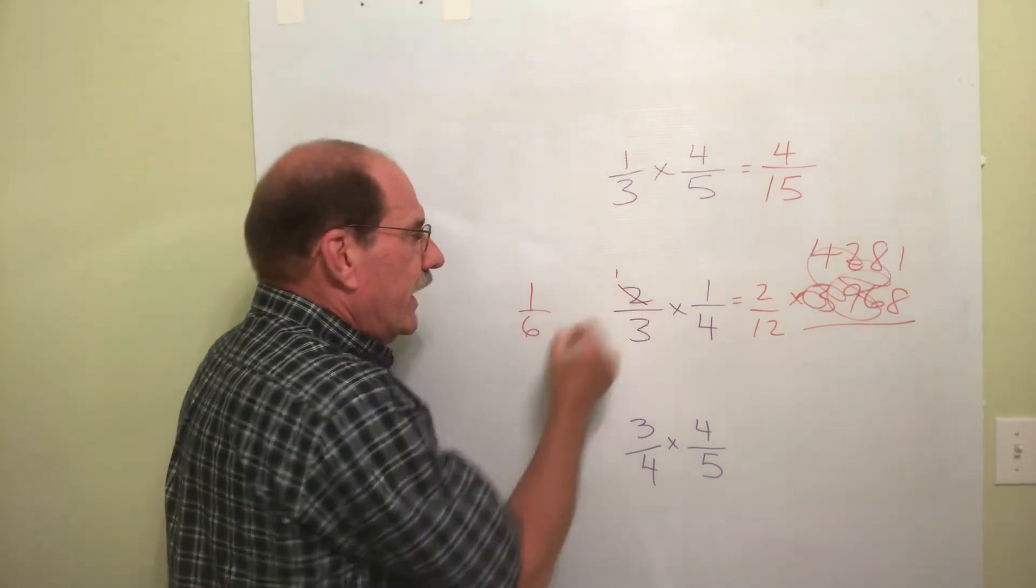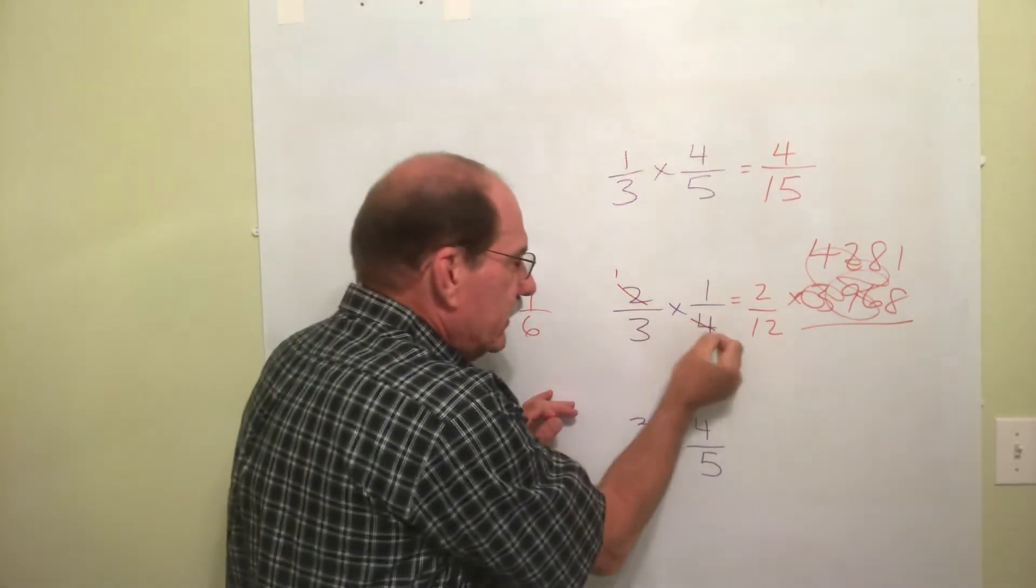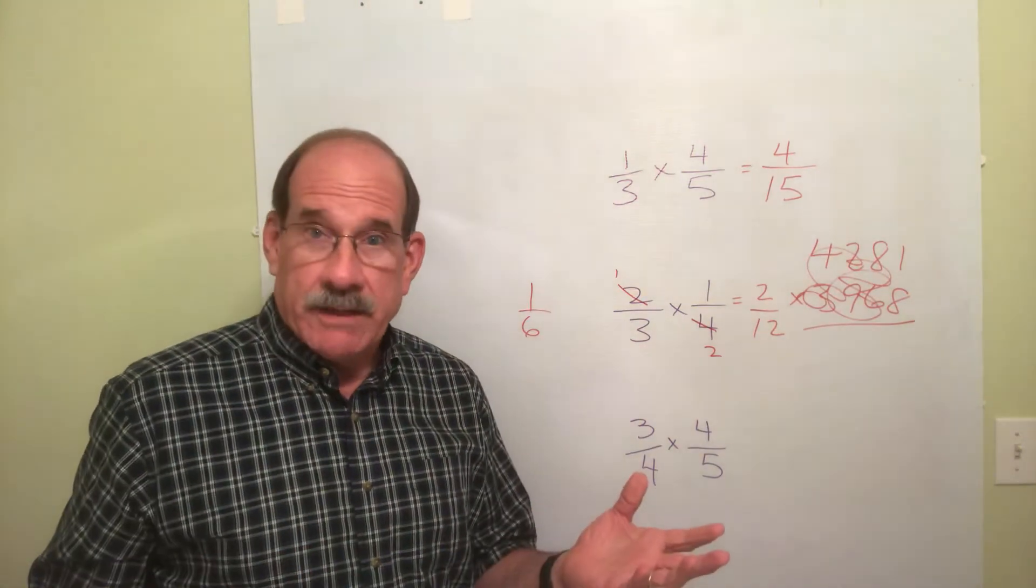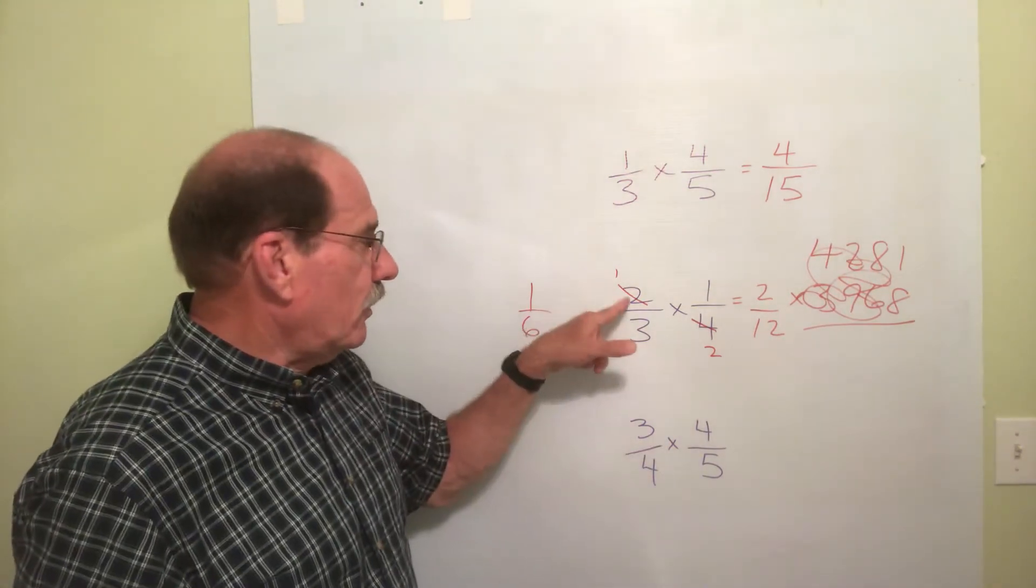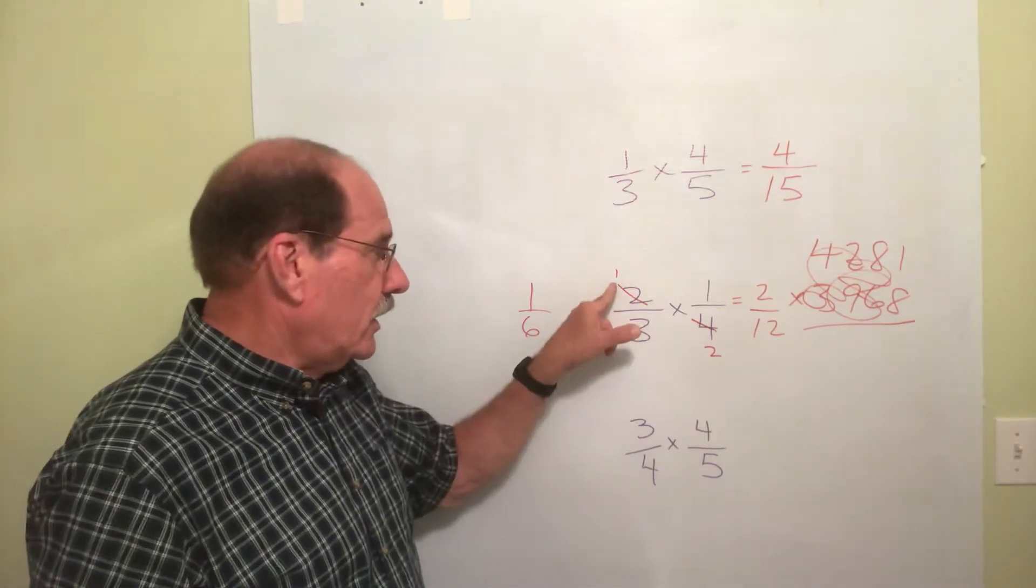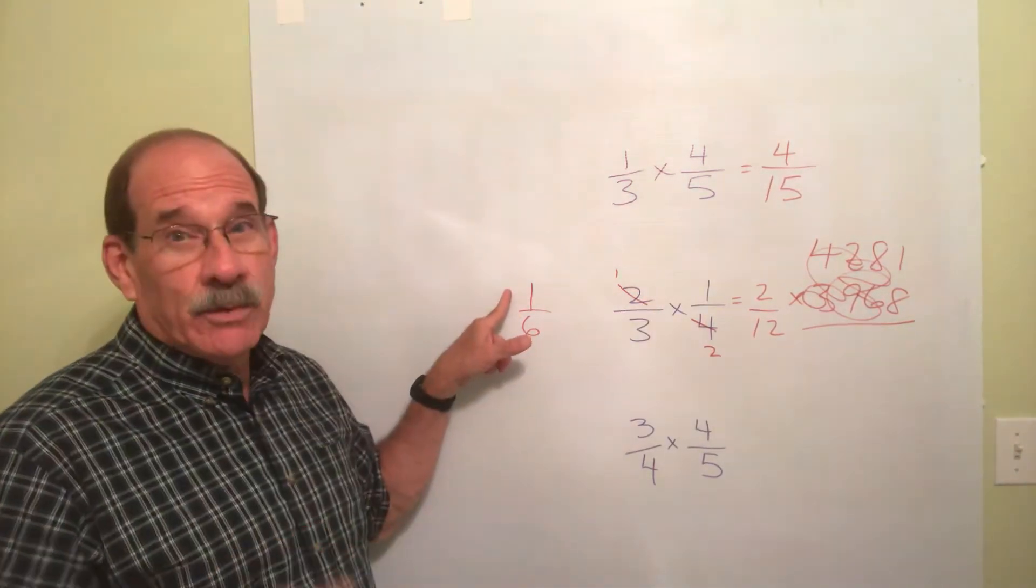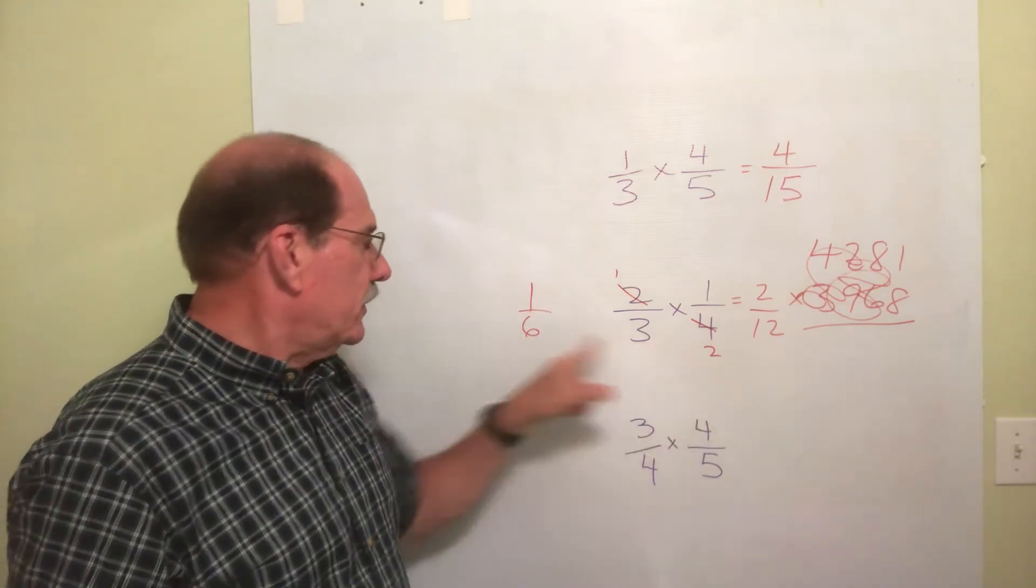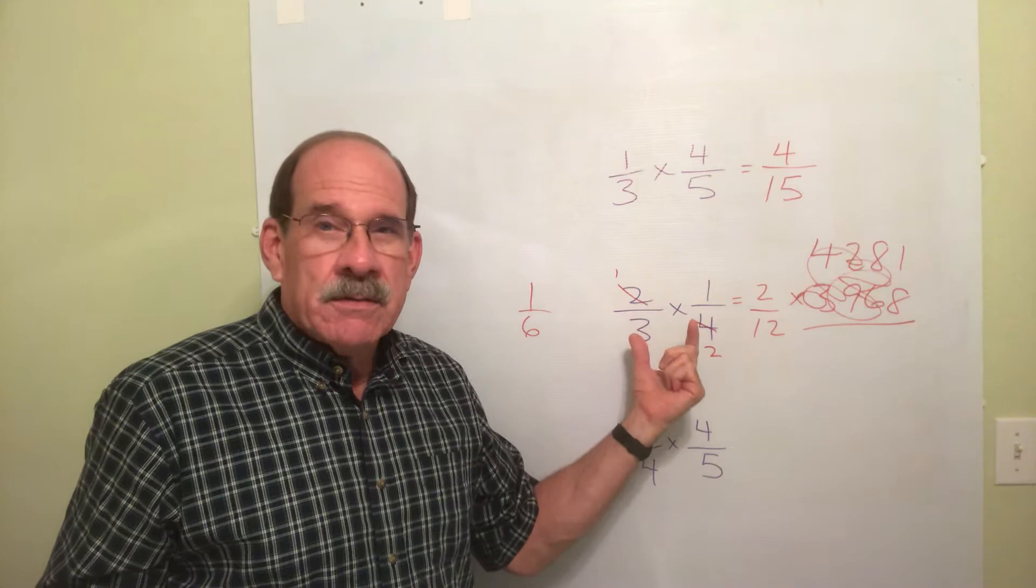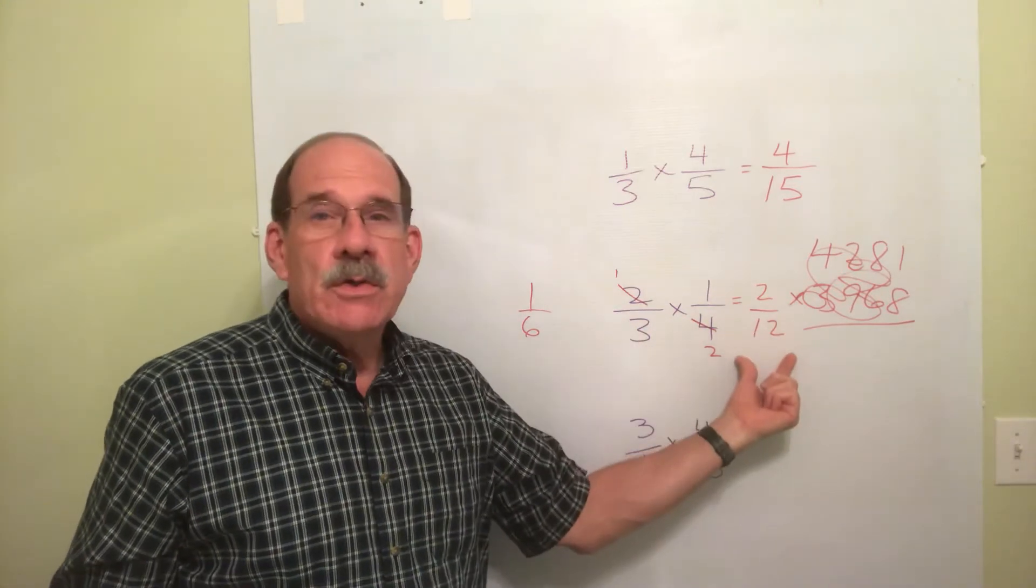Let's divide both this and this by 2. If we divide this by 2, that's 1. If we divide this by 2, that's 2. Now, let's multiply. Now, this is no longer 2, it's 1. That is no longer 4, that's 2. So, now 1 times 1 is 1. 3 times 2 is 6. If you do this first, you will never have to reduce your final answer.